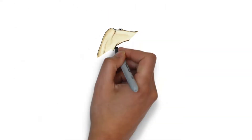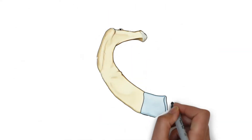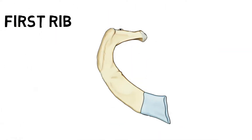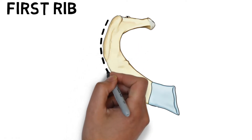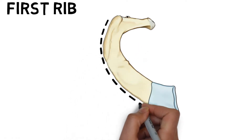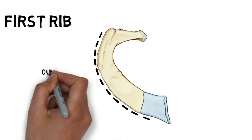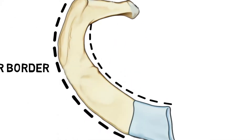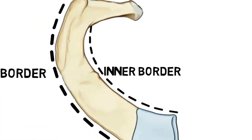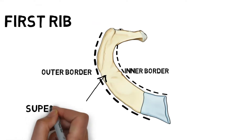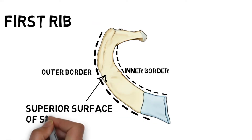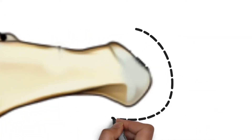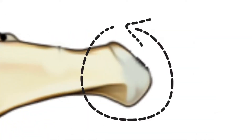Here is the first rib. As you can see, it has a flat shaft. This is the outer border, this is the inner border, this is the superior surface of the shaft, and below it is the inferior surface. This is the head, and as you can see it has a round shape.